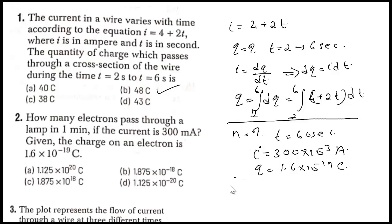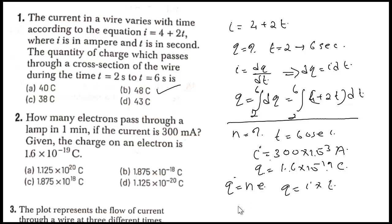We need to find the number of electrons n. Using quantization of charge: q = ne. First find the total charge using q = i·t. Then n = q/e. So n = (i·t)/e = (300 × 10⁻³ × 60) / (1.6 × 10⁻¹⁹).